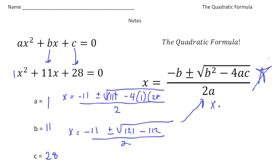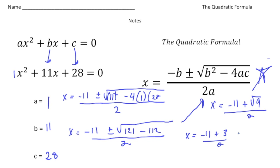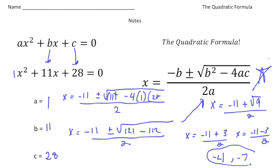So x is going to equal negative 11 plus or minus — 121 take away 112 is 9 — the square root of 9, divided by 2. And that's a nice perfect square, so this will be nice for us. So x equals negative 11 plus 3 divided by 2, and x also equals negative 11 minus 3 divided by 2. Negative 11 plus 3 is negative 8; negative 8 divided by 2 is negative 4. And negative 11 minus 3 is negative 14; negative 14 divided by 2 is negative 7. So negative 4 and negative 7 are the two solutions.